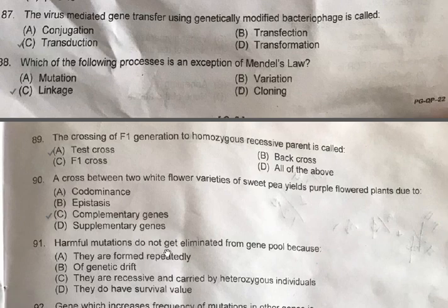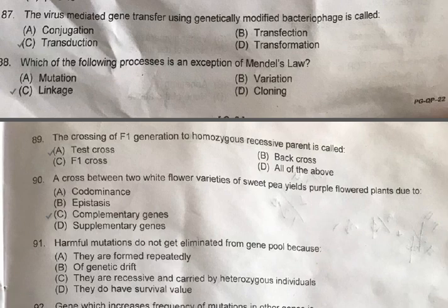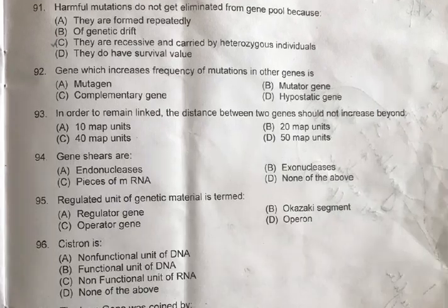Question 91: Harmful mutations do not get eliminated from the gene pool because — A: They are formed repeatedly, B: Because of genetic drift, C: They are recessive and carried by heterozygous individuals, D: They do have survival value. The correct option is C. Although these mutations are harmful, since they are in the recessive state, they may not contribute to reducing the fitness of the individual. Question 92: A gene which increases the frequency of mutations in other genes is — A: Mutagen, B: Mutated gene, C: Complementary gene, D: Hypostatic gene. Option B, Mutated gene, is correct.